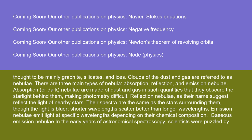Absorption or dark nebulae are made of dust and gas in such quantities that they obscure the starlight behind them, making photometry difficult. Reflection nebulae, as their name suggests, reflect the light of nearby stars. Their spectra are the same as the stars surrounding them, though the light is bluer, as shorter wavelengths scatter better than longer wavelengths.